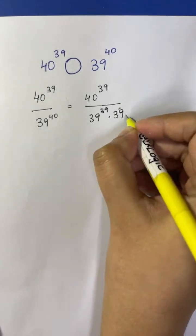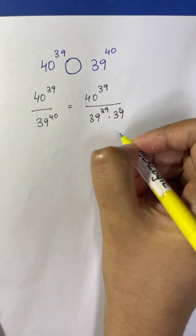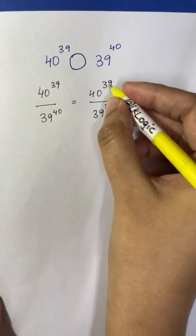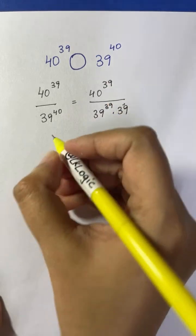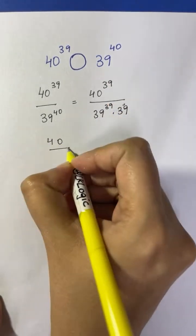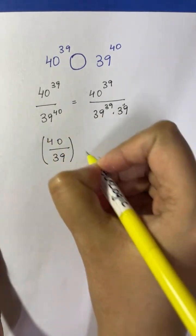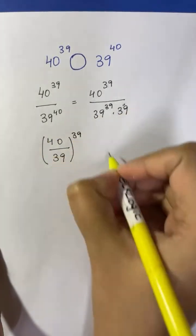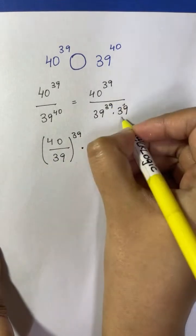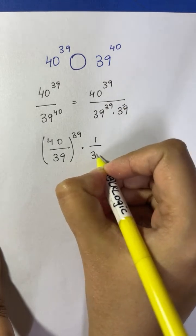Now this 39 has a power of 1, so when you have the same base you can add the powers. Now you have the same exponent 39 on both parts. So let's write it as (40/39) whole to the power of 39, times 1 over 39.